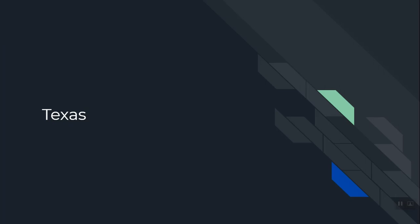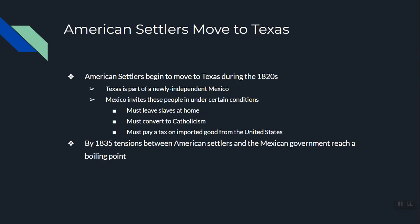Another big topic is Texas. American settlers began moving to Texas as early as the 1820s, and Texas used to be part of Mexico. Mexico got its independence from Spain in the late 1810s, early 1820s, and then invited people to come settle in the area known as Texas. There were conditions: settlers had to leave slaves at home — Mexico was slave-free — and they had to convert to Catholicism, since Mexico's people were Catholic.